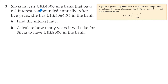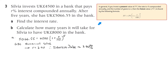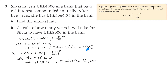Question three. Sylvia invests £4,500 in a bank that pays R% interest compounded annually. After five years she has £5,066.55 in the bank. Part A: find the interest rate. The future value is £5,066.55, the present value is £4,500, and N is five years. Use numerical solve on your calculator to get 2.4, and since they ask for the interest rate, write it as 2.40%.